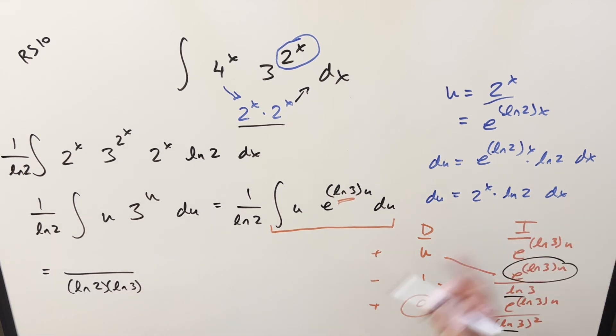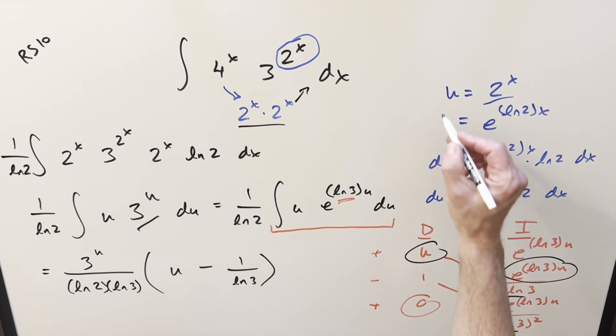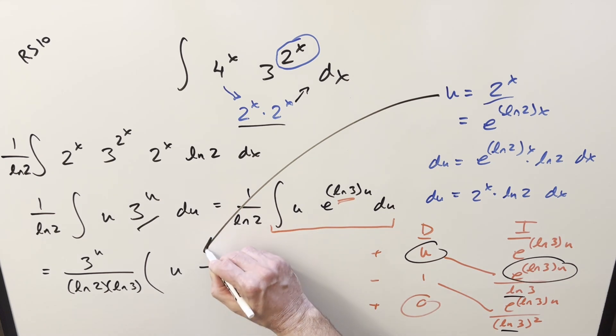So let's do ln 2 times ln 3, and then we have this in common, but I'm going to put this back the way we had it before, and write this as 3 to the u. So we'll have 3 to the u out here, and then what's left, we have a u minus 1 over ln 3. So now all we need to do is just back substitute in order to finish it off.